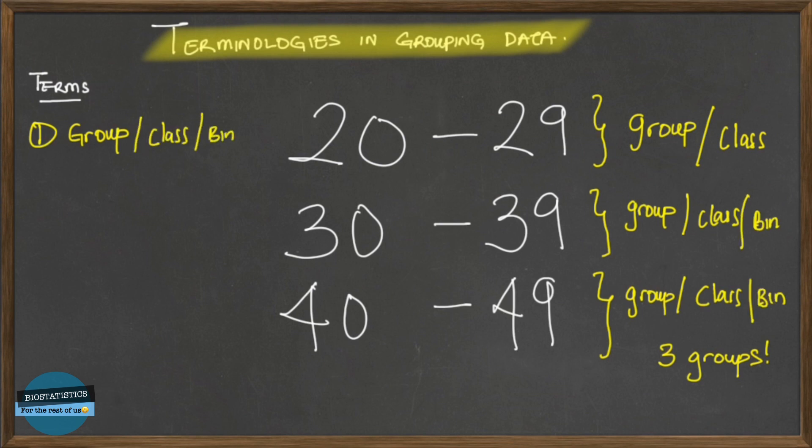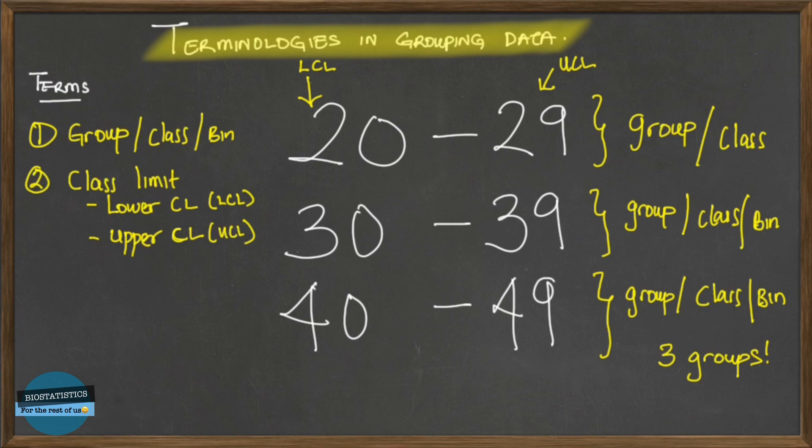The next is called the class limit. When we talk about class limit, we have what is called the lower class limit or the upper class limit. The lower class limit is the smallest value that can go into a class. So looking at this first class, the lower class limit is 20, and then the upper class limit is 29.